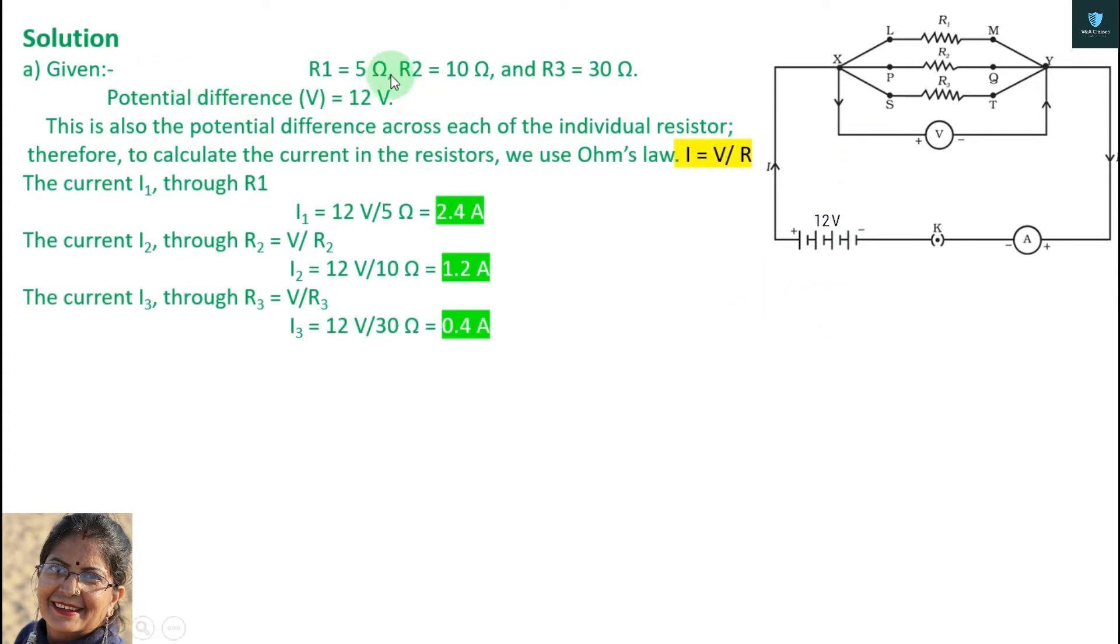Given R1, R2, R3, the potential difference is 12 volt. Now we will take the formula, Ohm's law. What is the formula? I equals to V upon R.